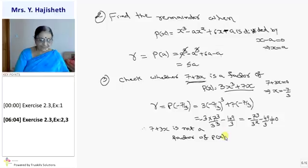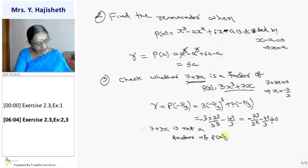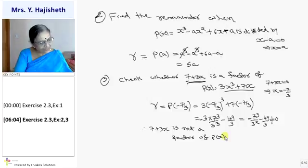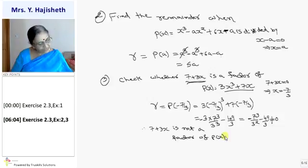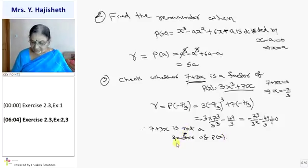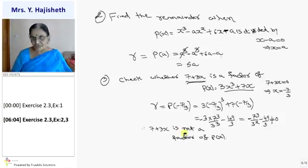Checking the answers from the back of the book: for the third sum the answer is 'No' since the remainder is not 0. Second sum gives 5a — confirmed correct. And for the first sum: 0, 27/8, 1, −π³ + 3π² − 3π + 1, and −29/8 — all confirmed.